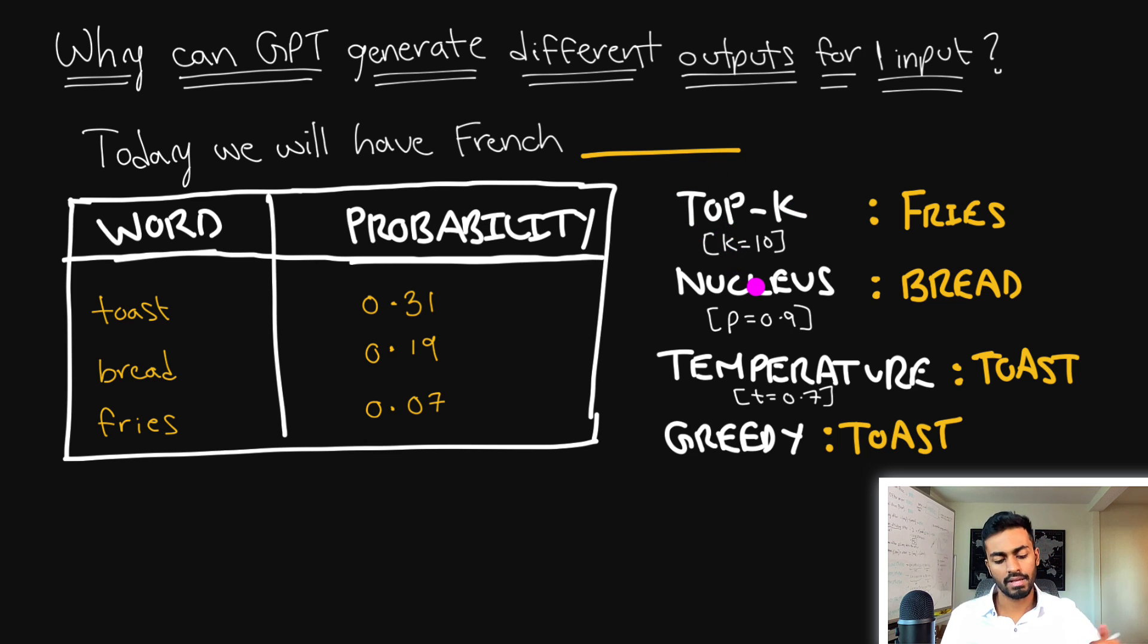With nucleus sampling, it's very similar, but instead of for every single case picking a fixed amount like 10, we'll pick a variable amount depending on the probability distributions we have at that point. For example, p equals 0.9 would mean we get all the words such that the top words correspond to up to 90% of the total probability. If you add these numbers, you get 0.57 - so hypothetically if this p was 0.57, we would have only taken these top three, sampled from it, and then used that as the French word. In this case, let's say we could have gotten something like bread - 'today we will have French bread' would have been the case with nucleus sampling.